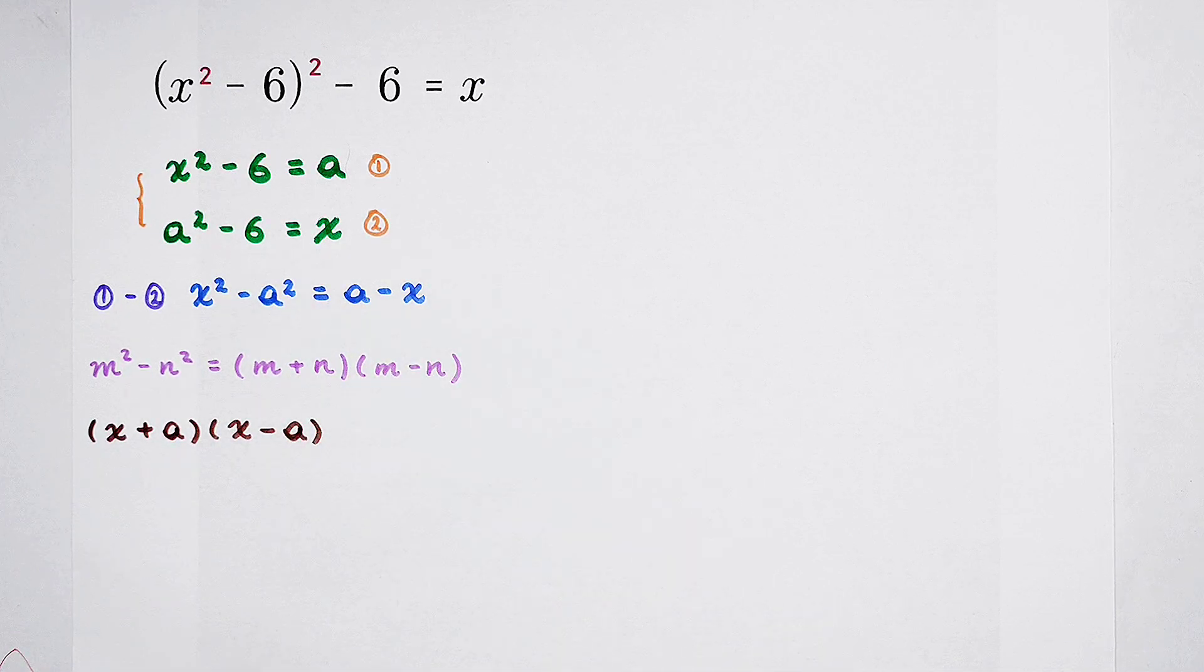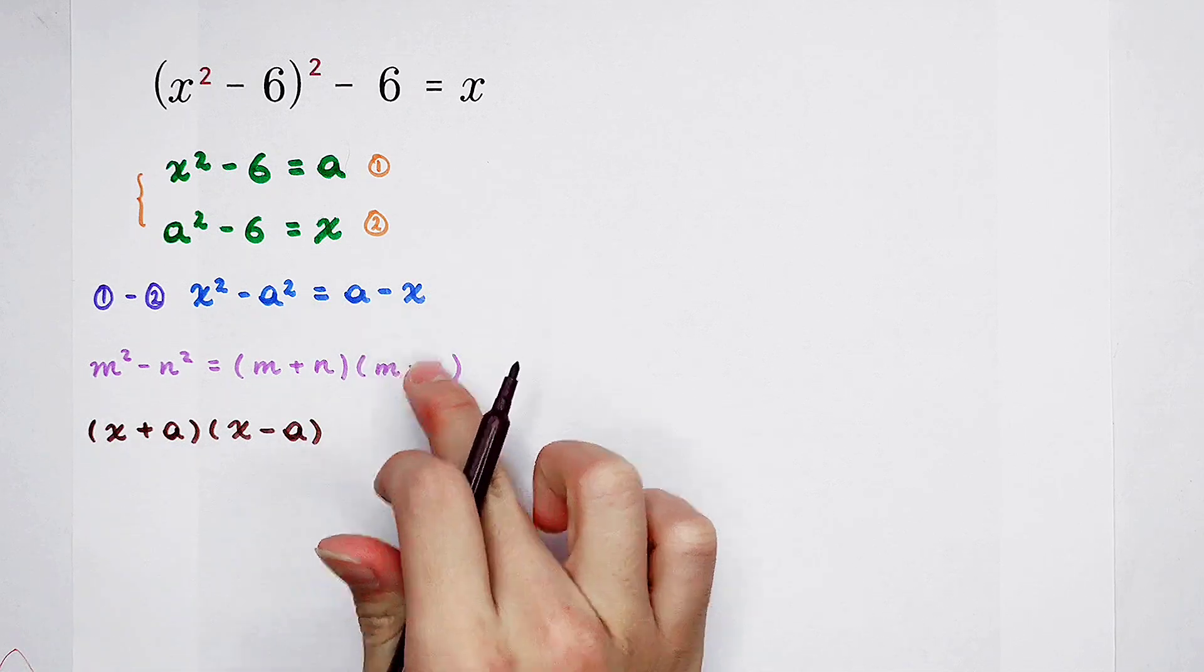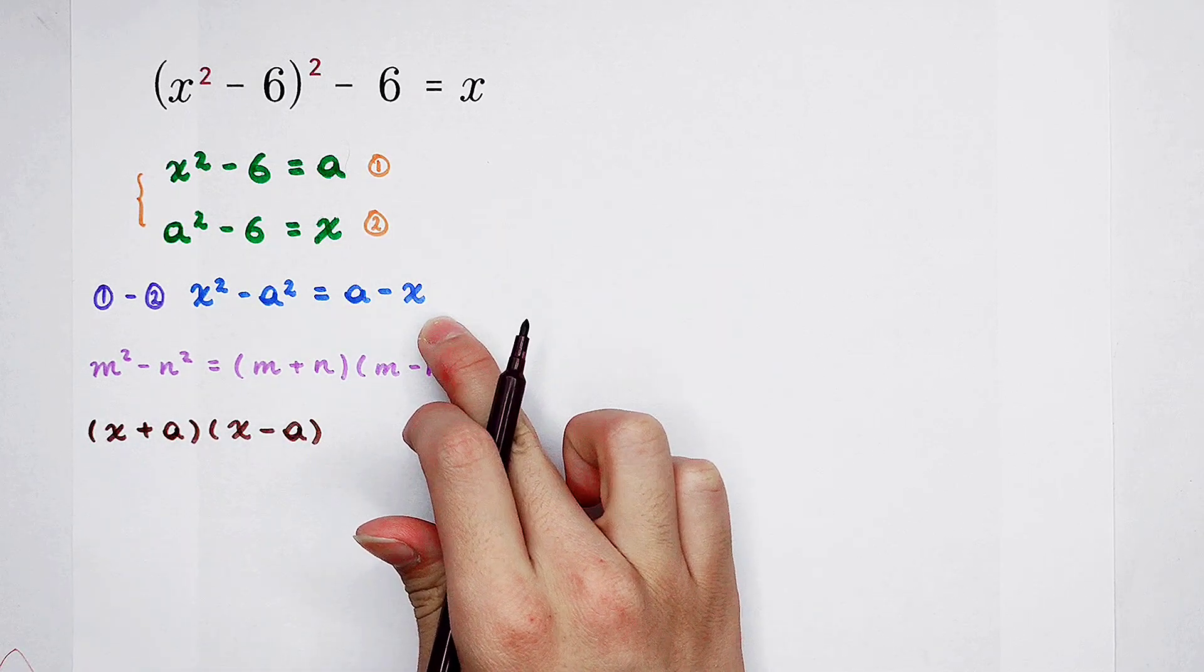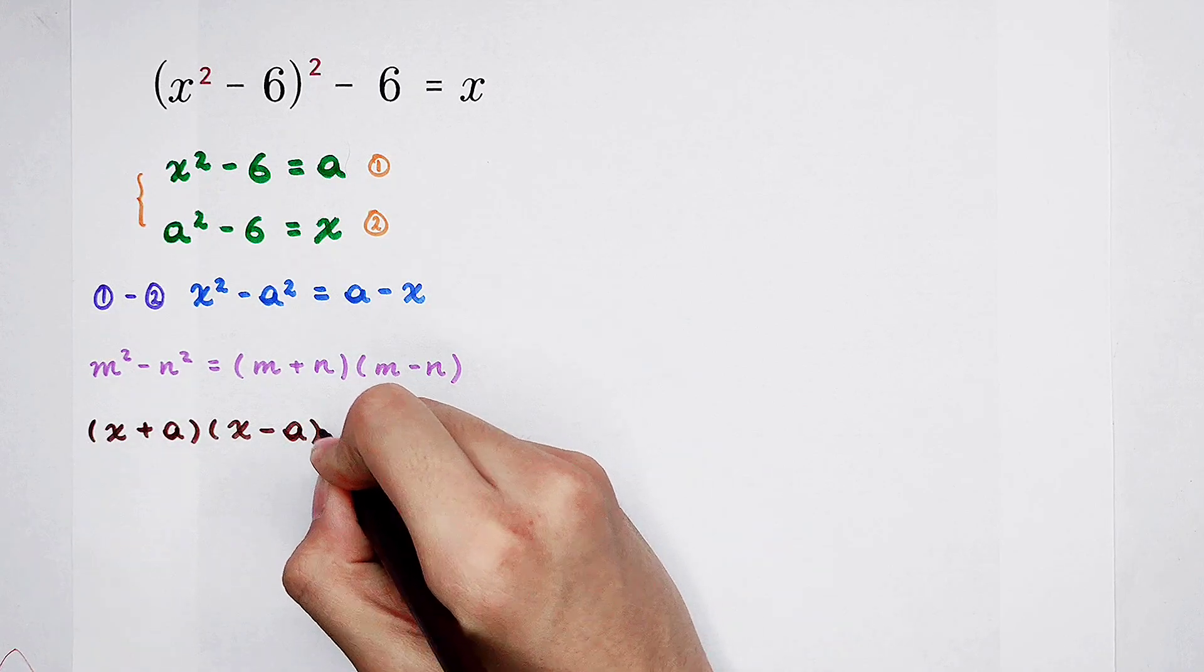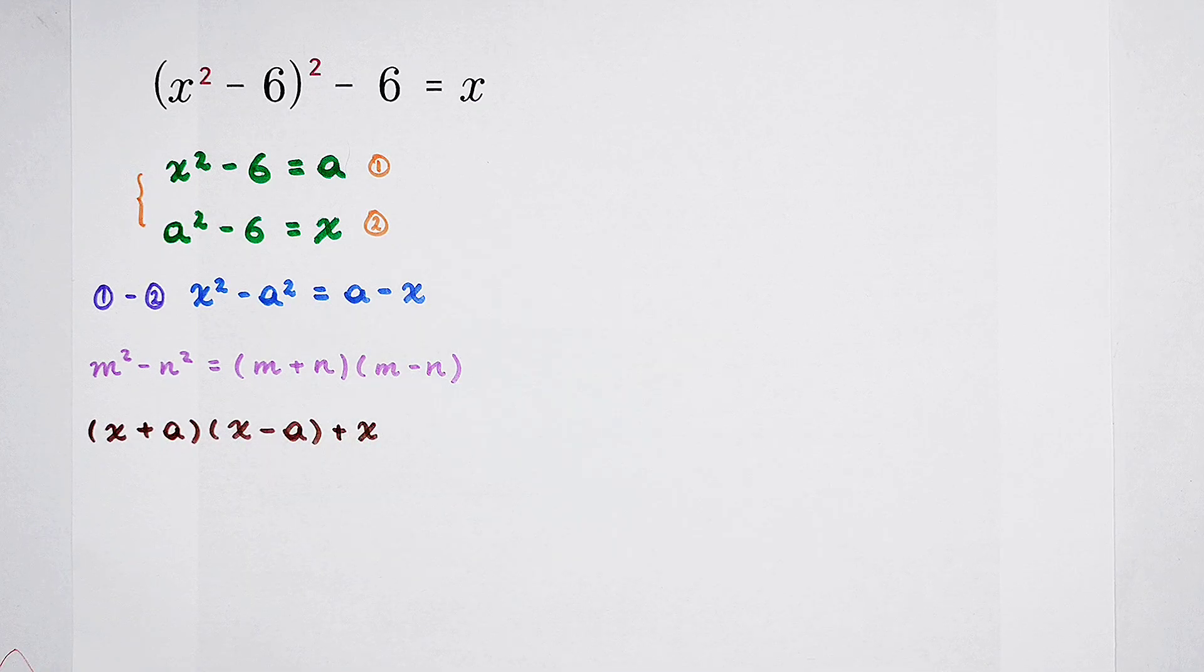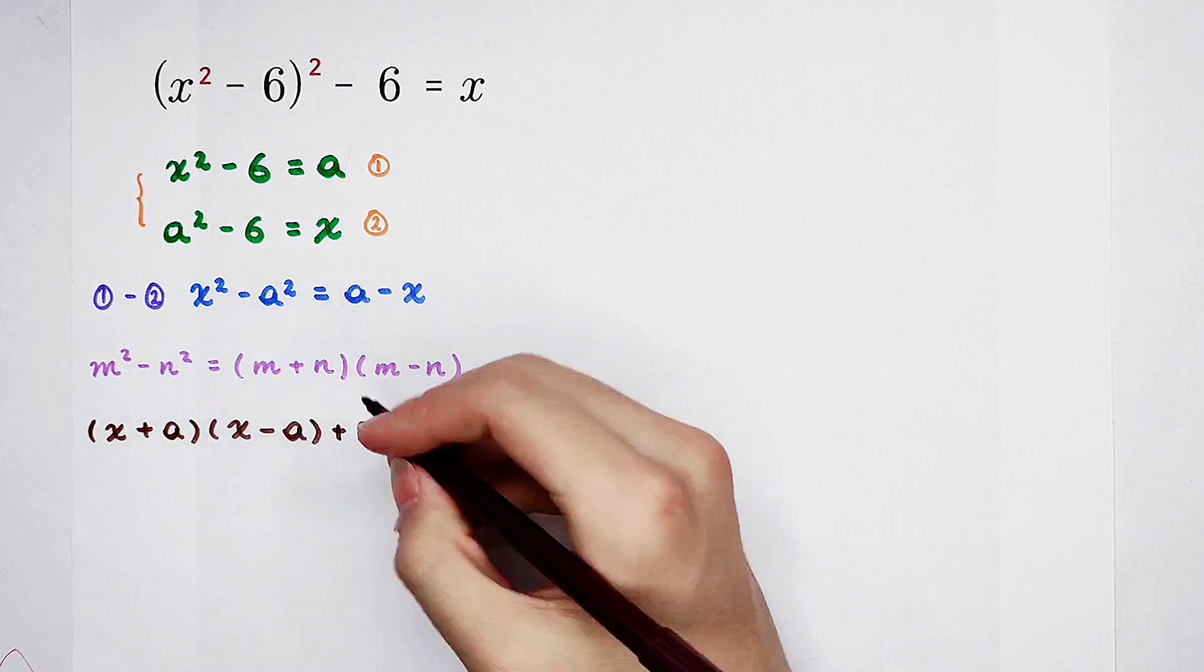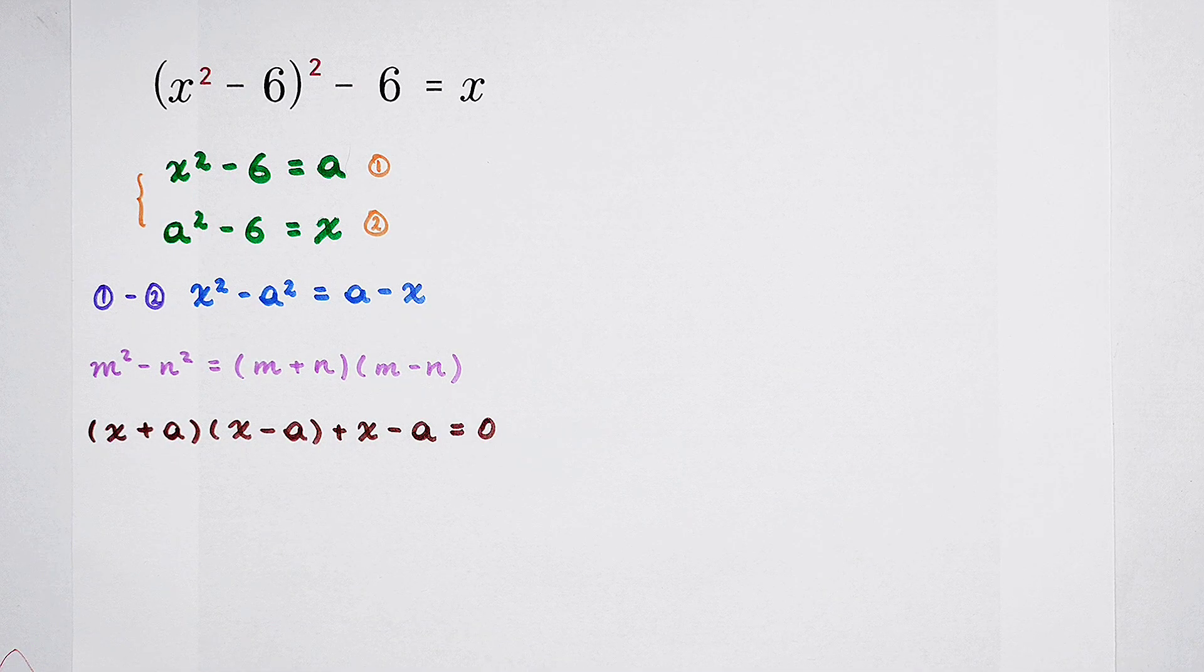At the same time, we have to remove this plus a and negative x from the right-hand side. We have to add an x on both sides, and the left-hand side will be plus x. And we have to subtract a from both sides, and here is negative a. Zero.